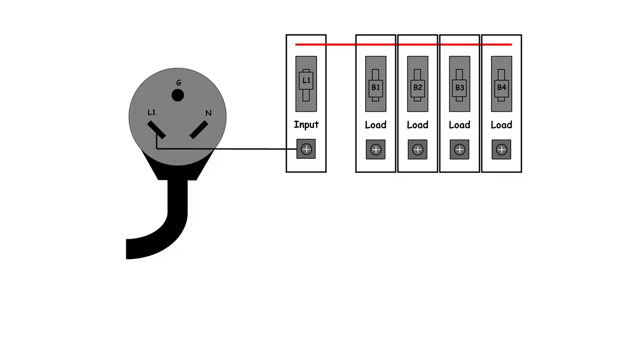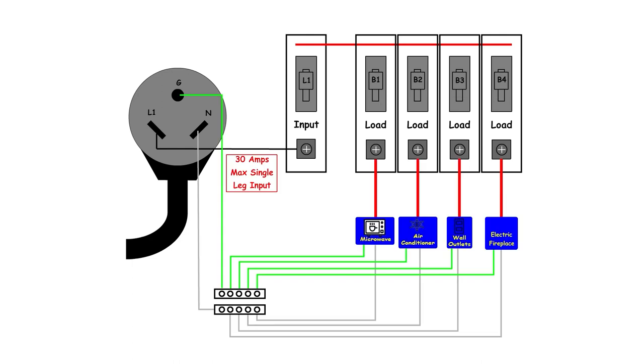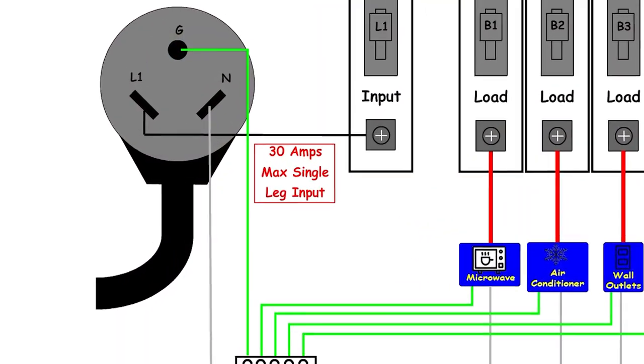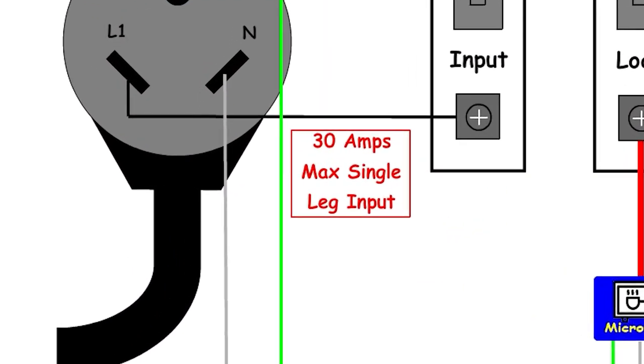When we shut each of those individual load breakers, we apply power or make power available to each of those loads. It doesn't necessarily mean they're going to turn on — we have to turn things on manually — but shutting the breaker makes power available. We have 30 amps total coming into that single input breaker, and on the output we also have only 30 amps of available load on this system.